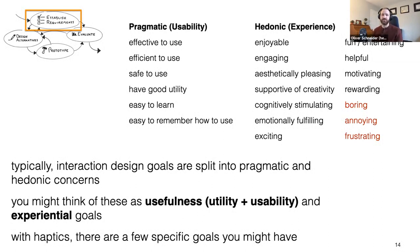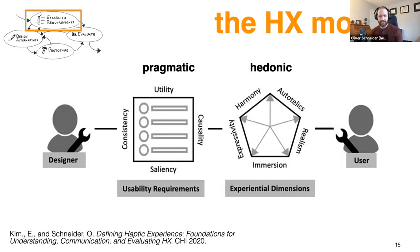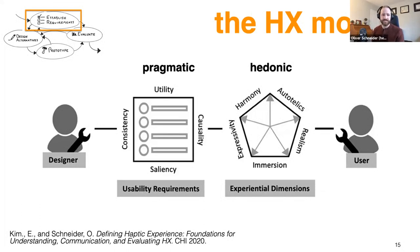With haptics, there are specific goals to consider. This year at CHI, the flagship HCI conference, we presented a model called the HX model — the haptic experience model — which splits concerns into pragmatic and hedonic, derived from interviews with haptics experts and novices. For pragmatic concerns, you want utility, but also consistency, causality, and saliency. Are people noticing the haptics but not so much that it's intrusive? Is it causal — do you know where the haptics is coming from and what it means?